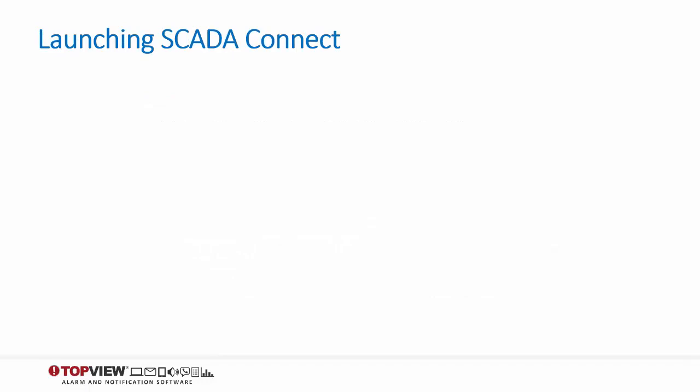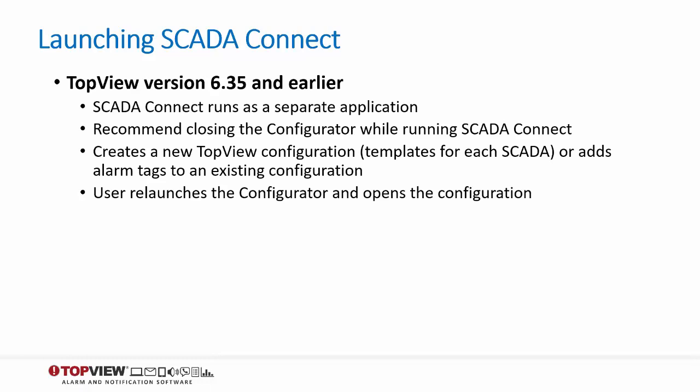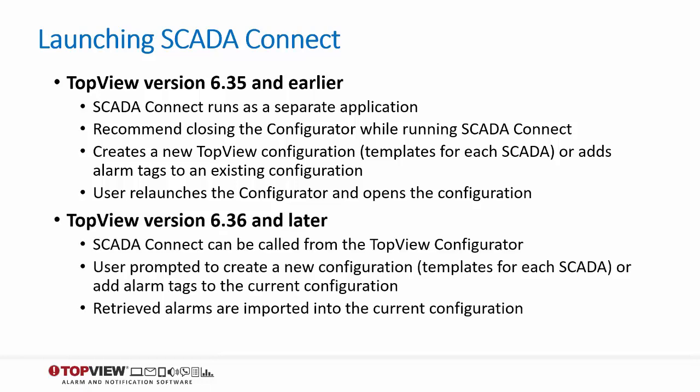Starting with version 635, SCADA Connect is installed with Top View. For earlier versions, the Top View download page contains links to download and install SCADA Connect. In Top View 635 and earlier, SCADA Connect runs as a separate application. Because SCADA Connect may make configuration changes to Top View, we recommend closing the configurator while using SCADA Connect. SCADA Connect will retrieve the SCADA alarm information and either create a new Top View configuration or add tags to an existing configuration. Once it completes, the user can open the updated configuration in the configurator. In Top View 636 and later, the user can run SCADA Connect without leaving the configurator. They can choose to add SCADA alarms to the existing configuration or to create a new configuration based on templates for each SCADA. The retrieved alarms are then imported into the configuration.